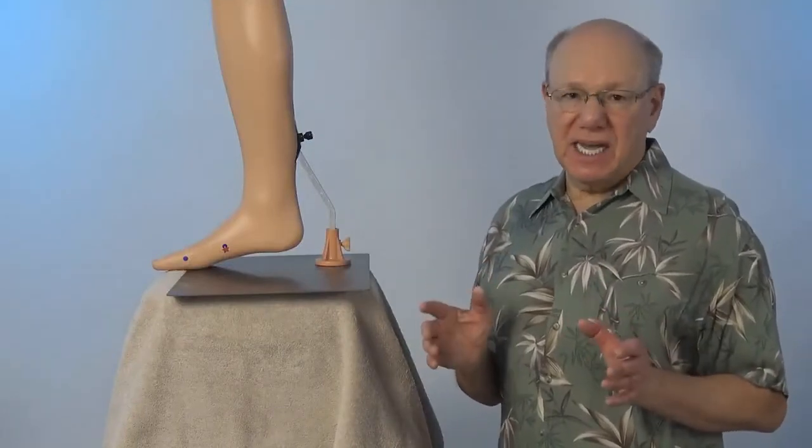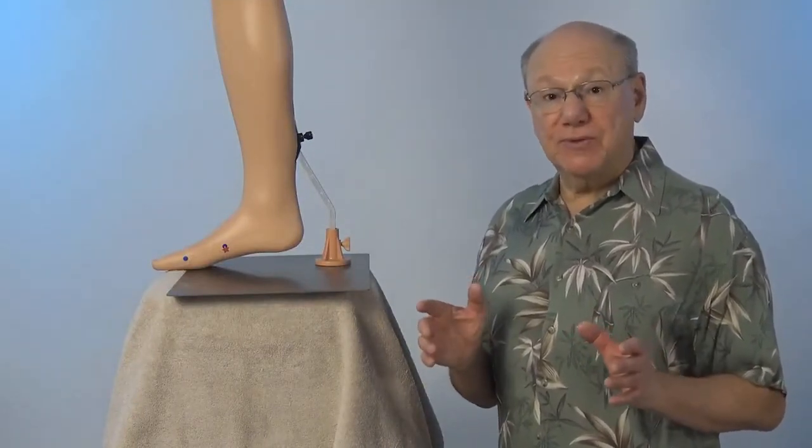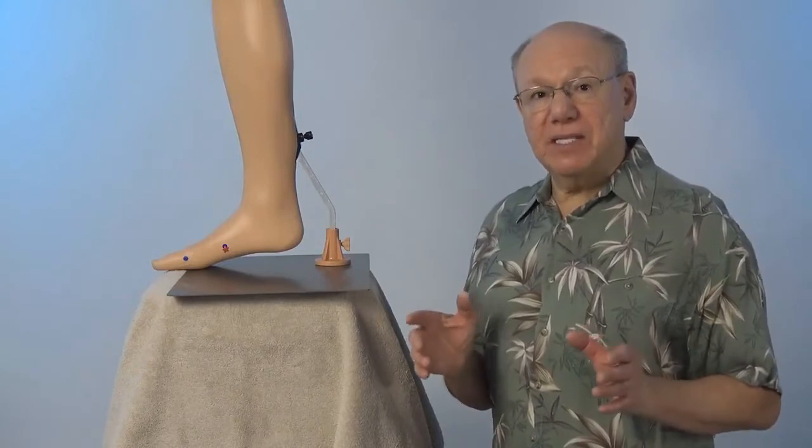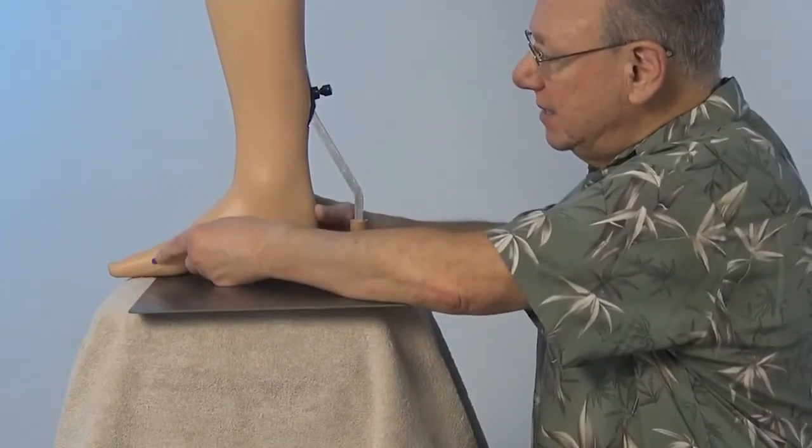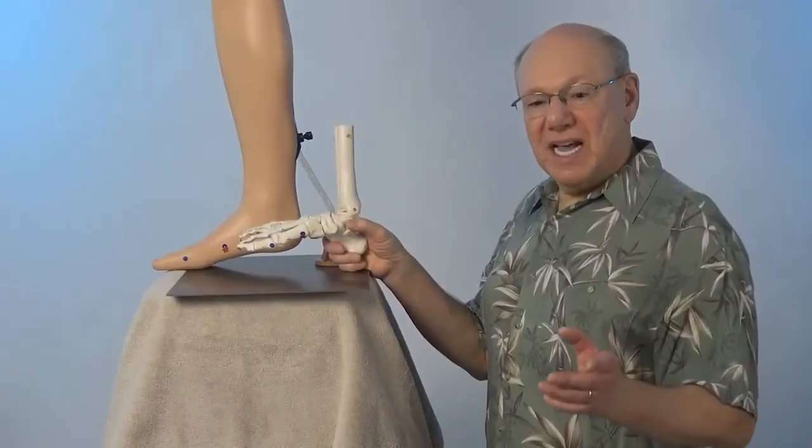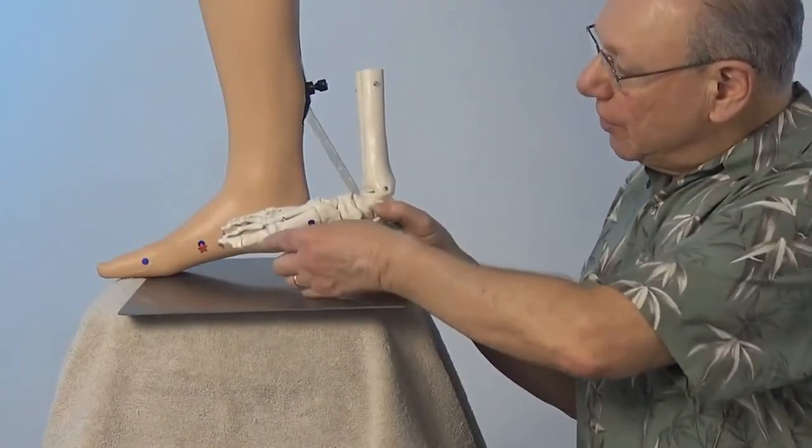Spleen 4 is located on the inside of your foot. To locate Spleen 4 on your right foot, find the base of your great toe right here. And on a skeleton, it's right over here.